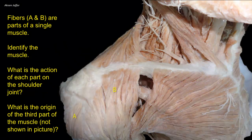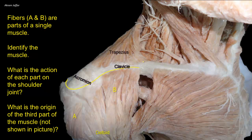Fibers A and B are parts of a single muscle. Identify the muscle and the action of each part on the shoulder joint. The deltoid muscle arises from the clavicle and scapula — from the acromion and the spine of the scapula — and its attachment is immediately below the attachment of the trapezius muscle. The central fibers A, arising mainly from the acromion process, are very strong multi-pinnate fibers consisting of groups of bipinnate fibers, making it a powerful muscle.